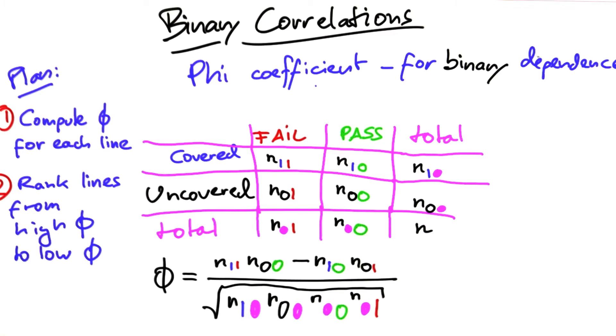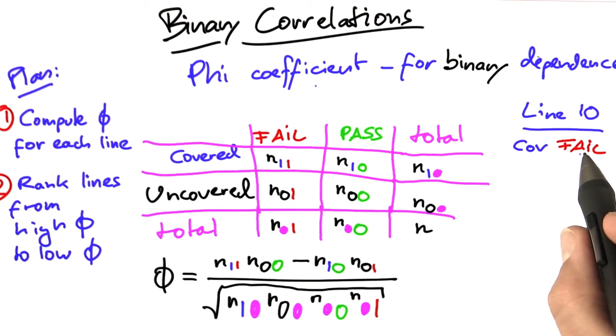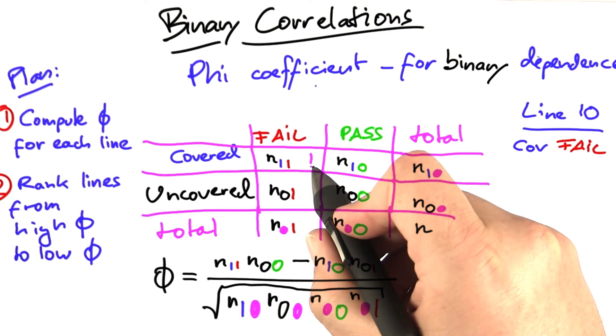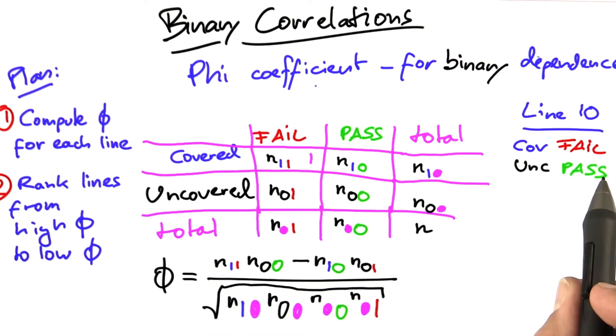Let me illustrate how the phi coefficient is computed on a simple example. Let's assume we have a line in our program, and a number of runs. In the first run, line 10 is executed, and the run fails. So, what we enter in the table for this line, is that we now have seen one instance where it covered and failed.